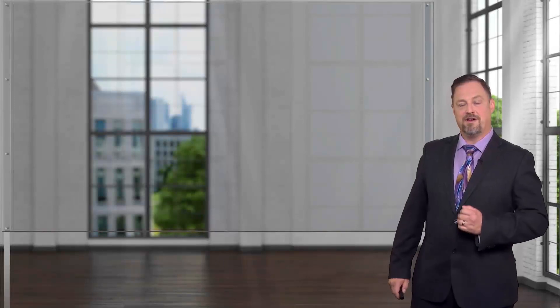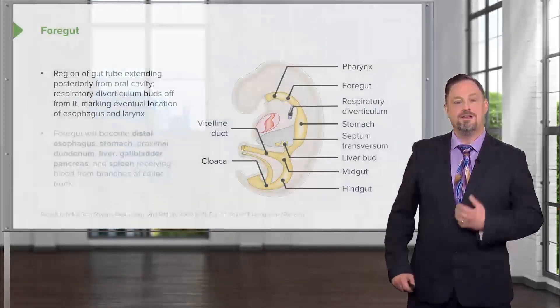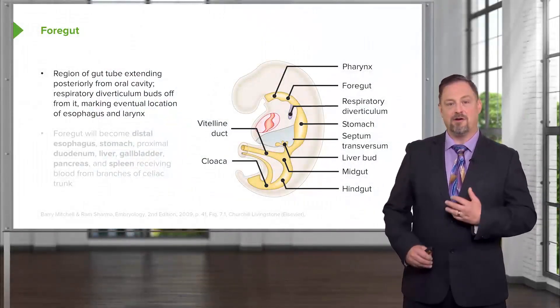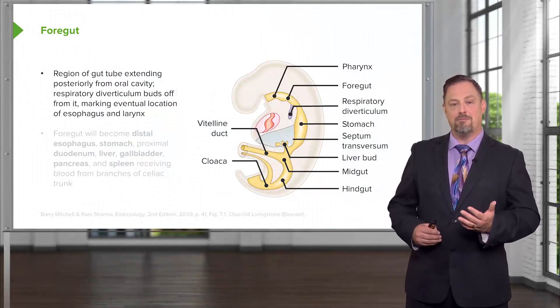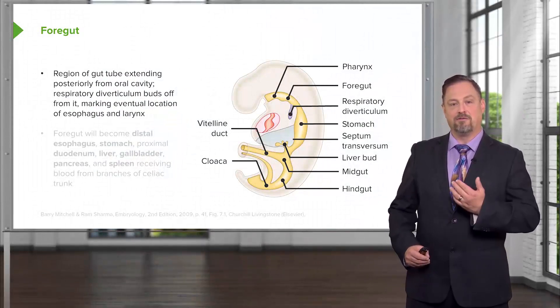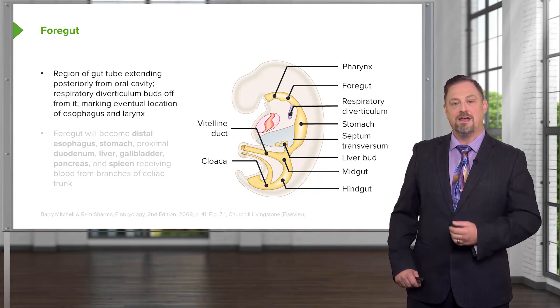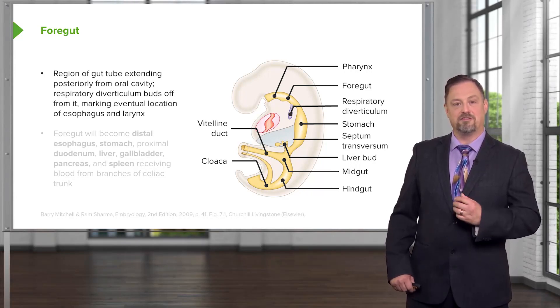We'll begin our exploration of how the foregut develops by looking at how the foregut and its associated glands separate from other organ systems. Initially the foregut is simply the area of the gut tube leading from the mouth a little further down to where the respiratory diverticulum buds off, and later the hepatic or liver bud is going to bud off of it as well.